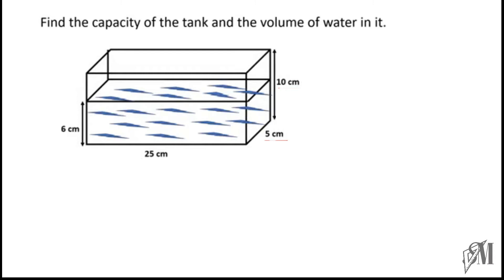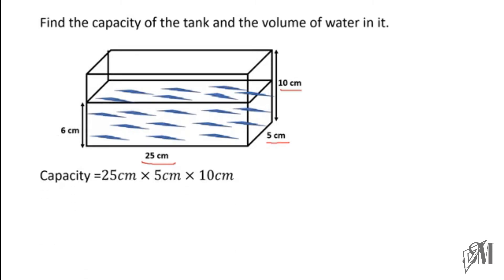First, let us find the capacity. To find the capacity, we take length as 25, breadth as 5, and height as 10 centimeters. Remember to apply 10 centimeters as the height when calculating capacity. Once you calculate, the answer becomes 1250 cubic centimeters.